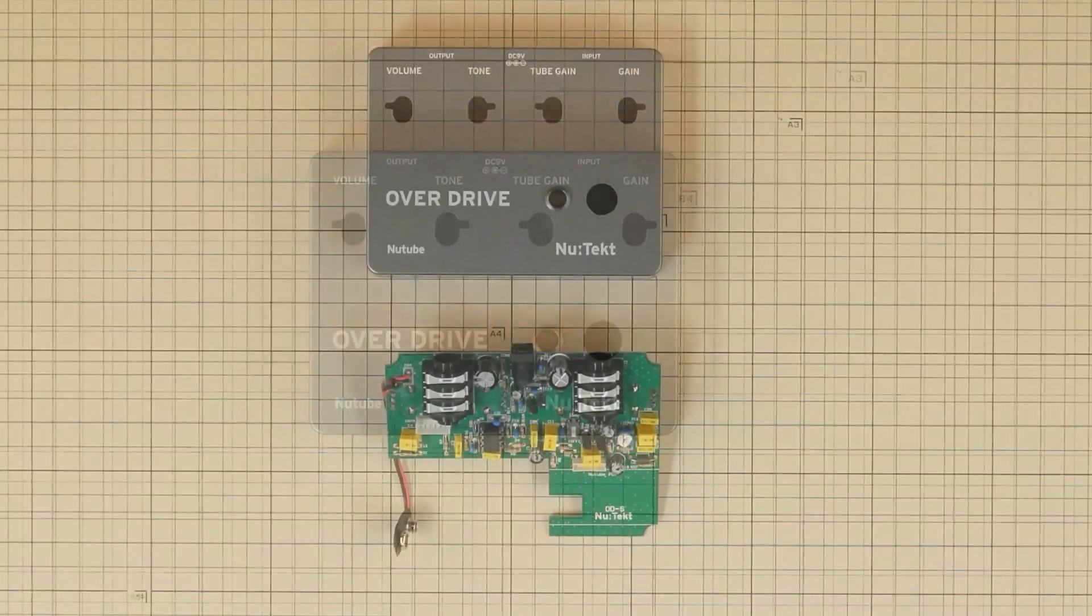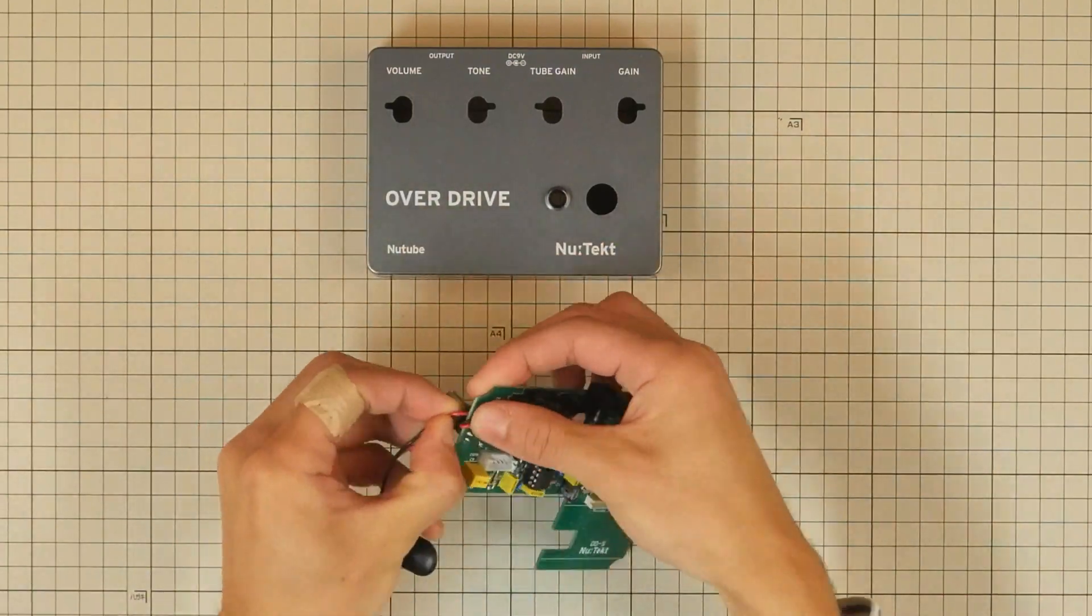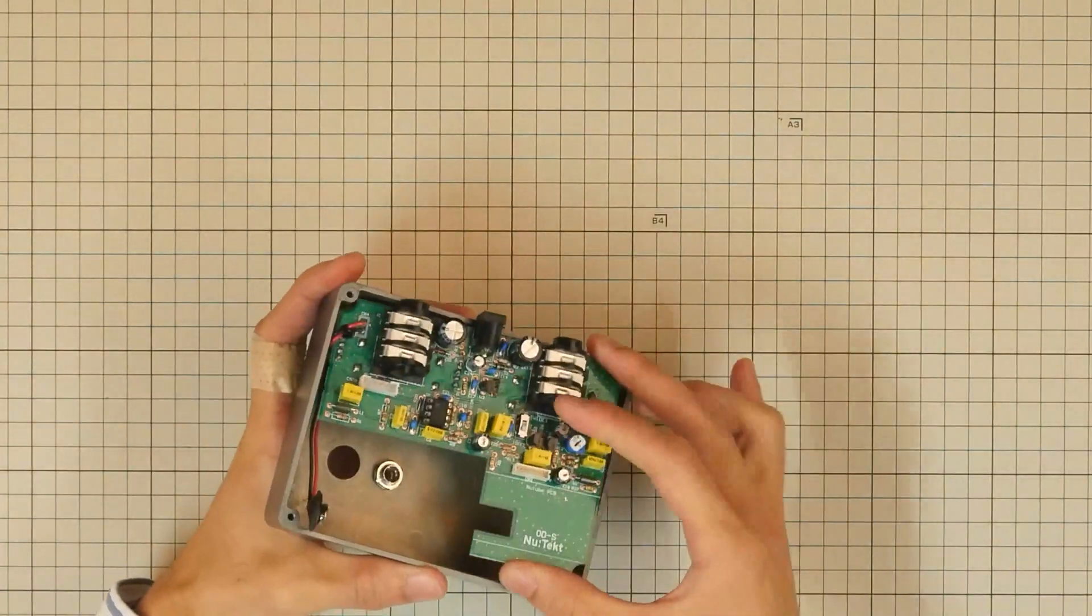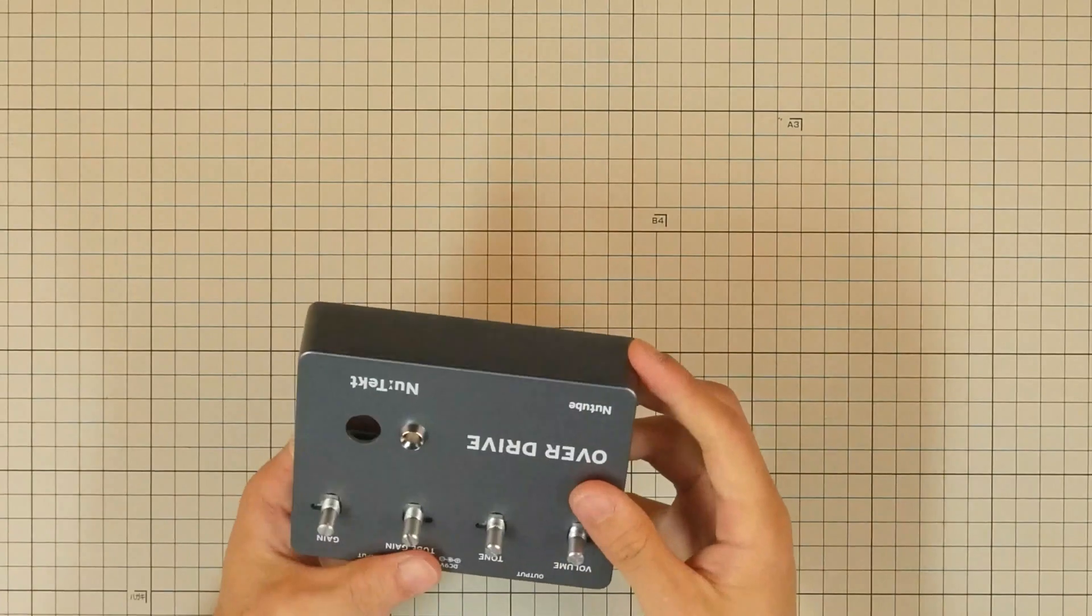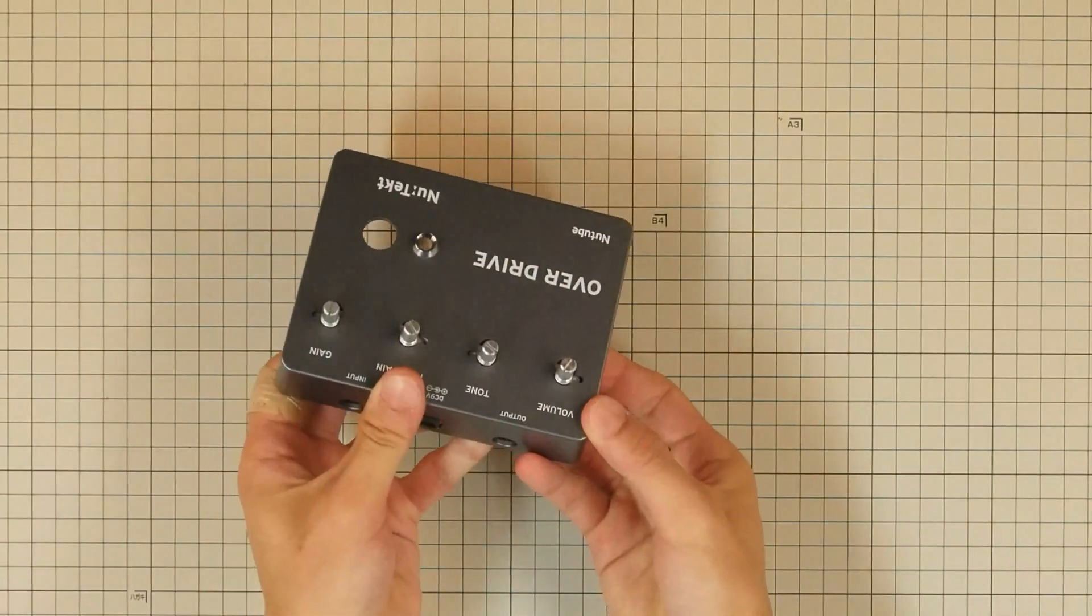Next it's time to install the main circuit board onto the upper case. Run the battery snap wires under the main board making sure that the nut doesn't loosen.